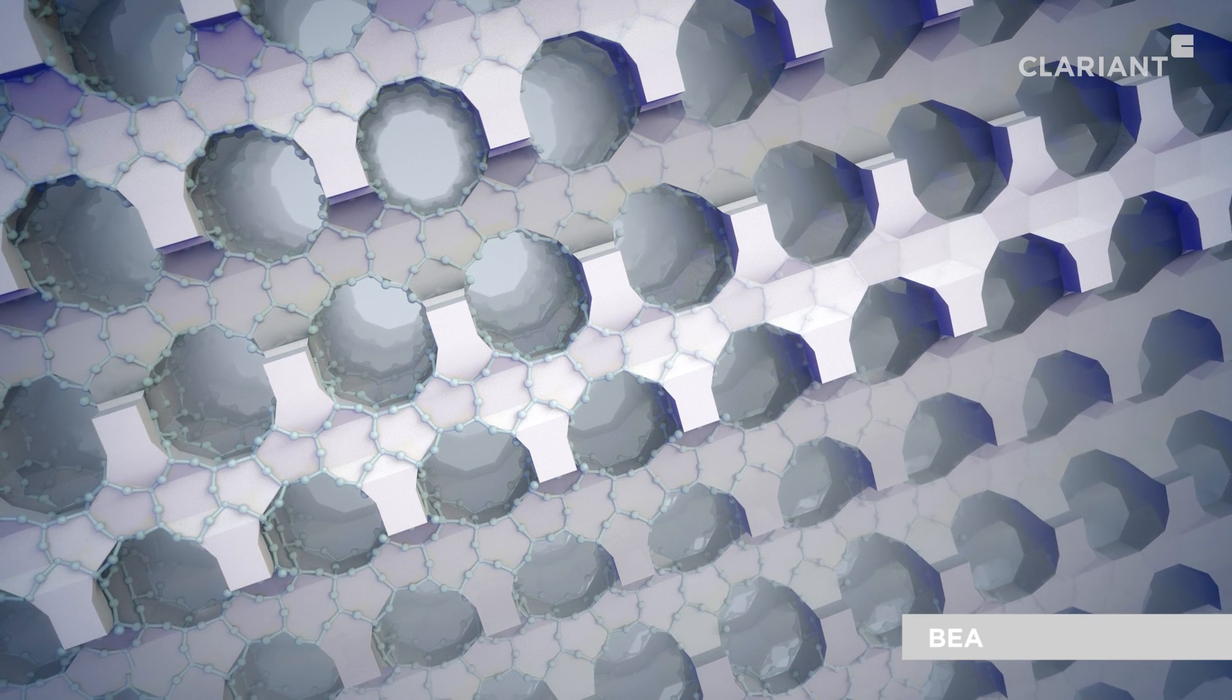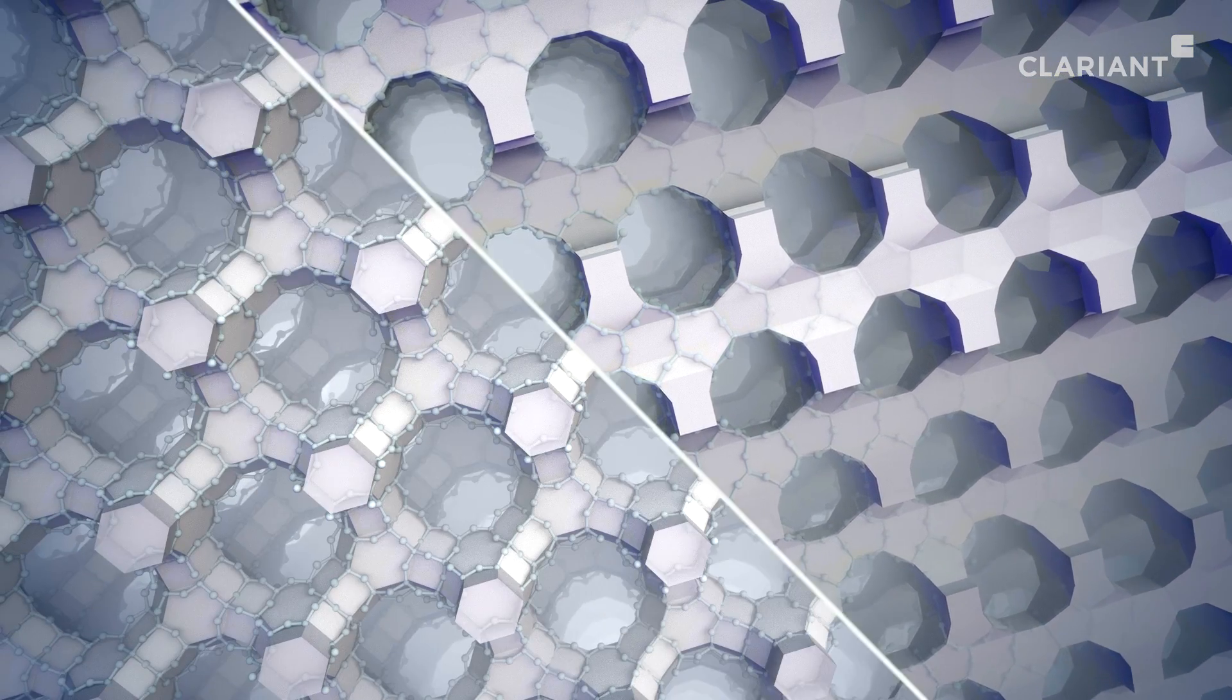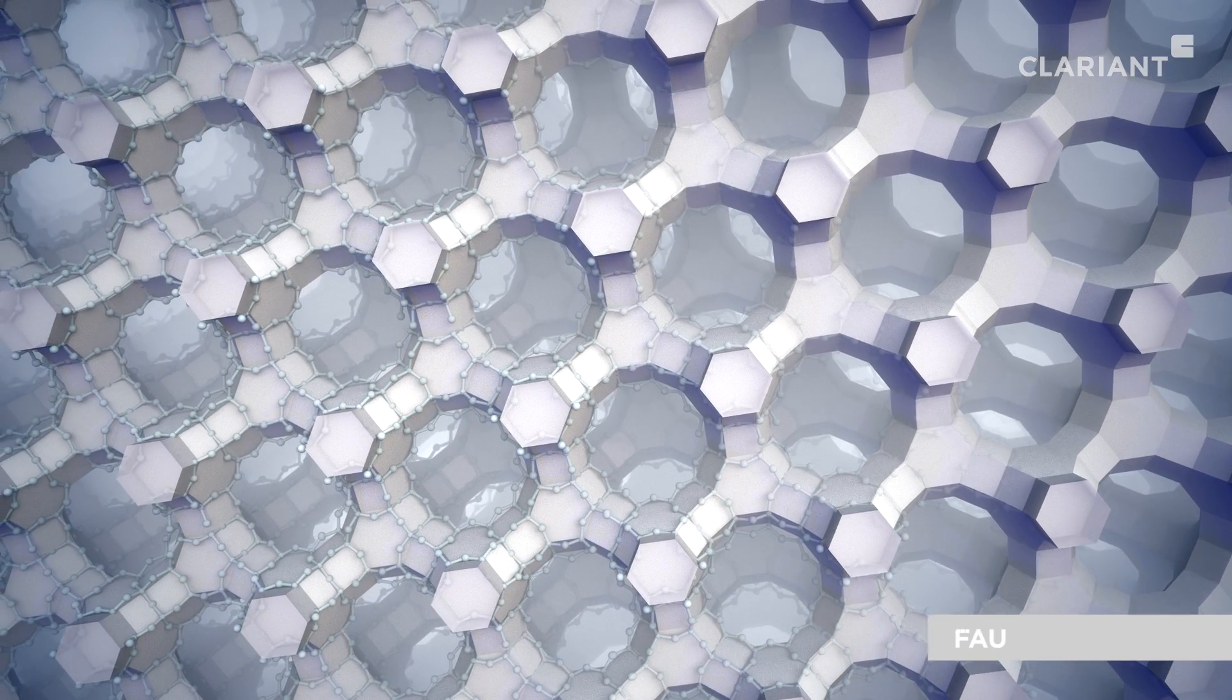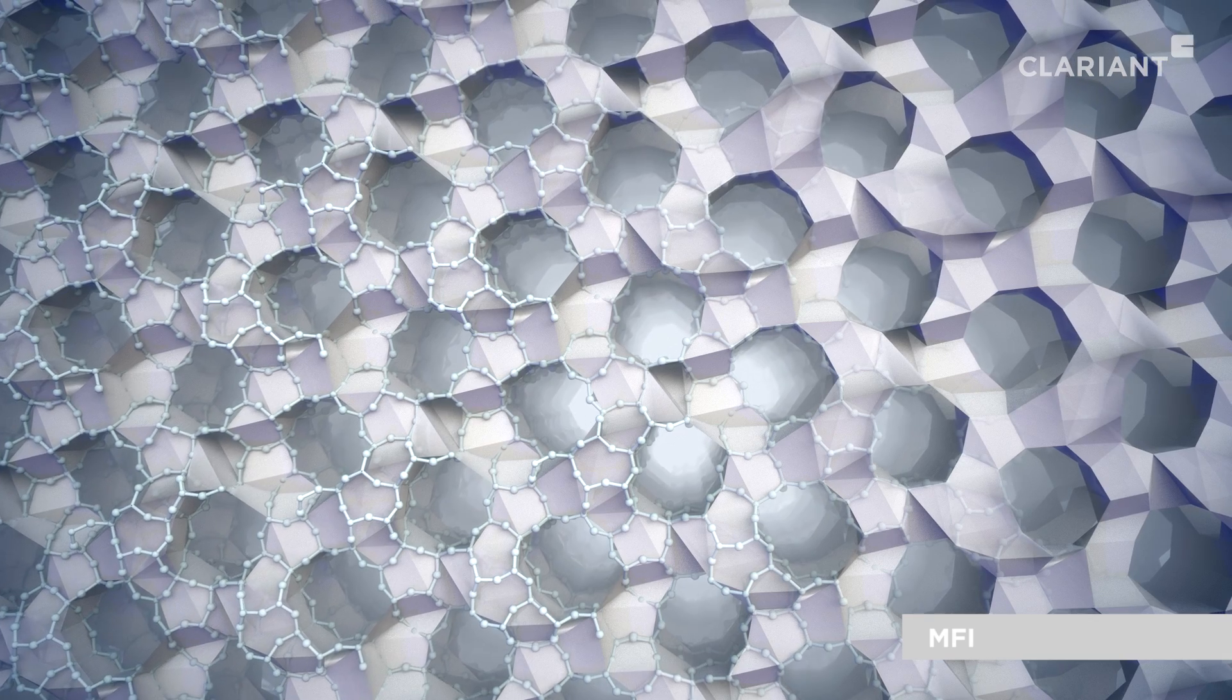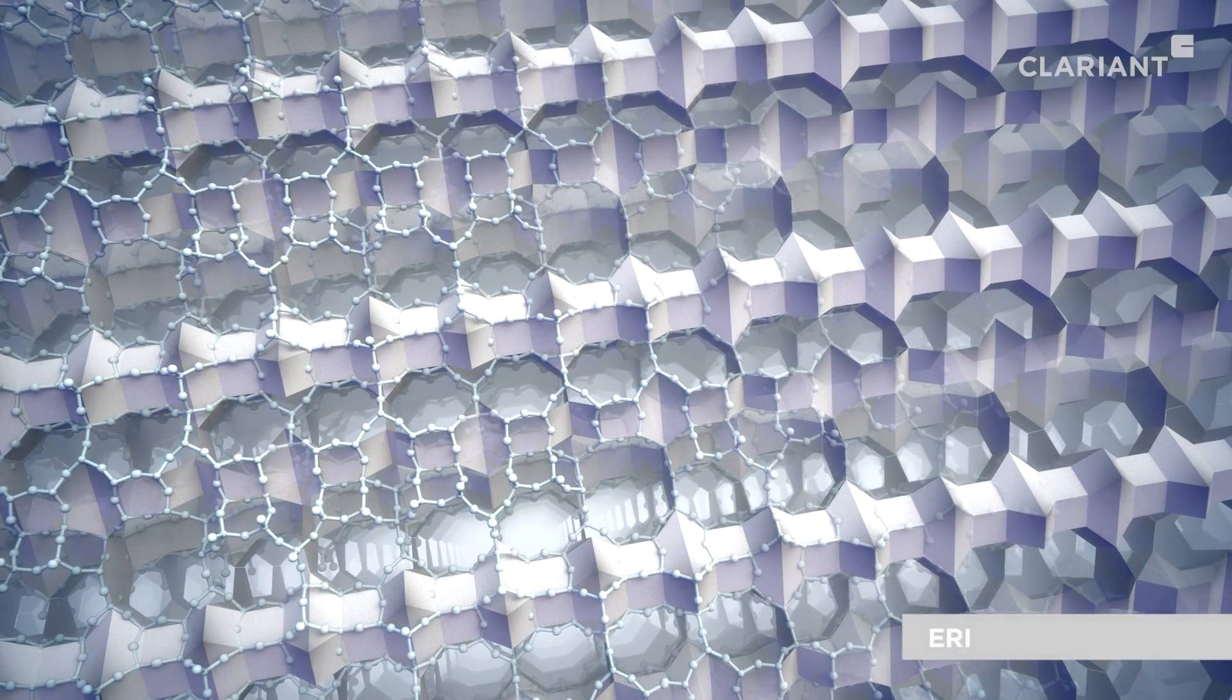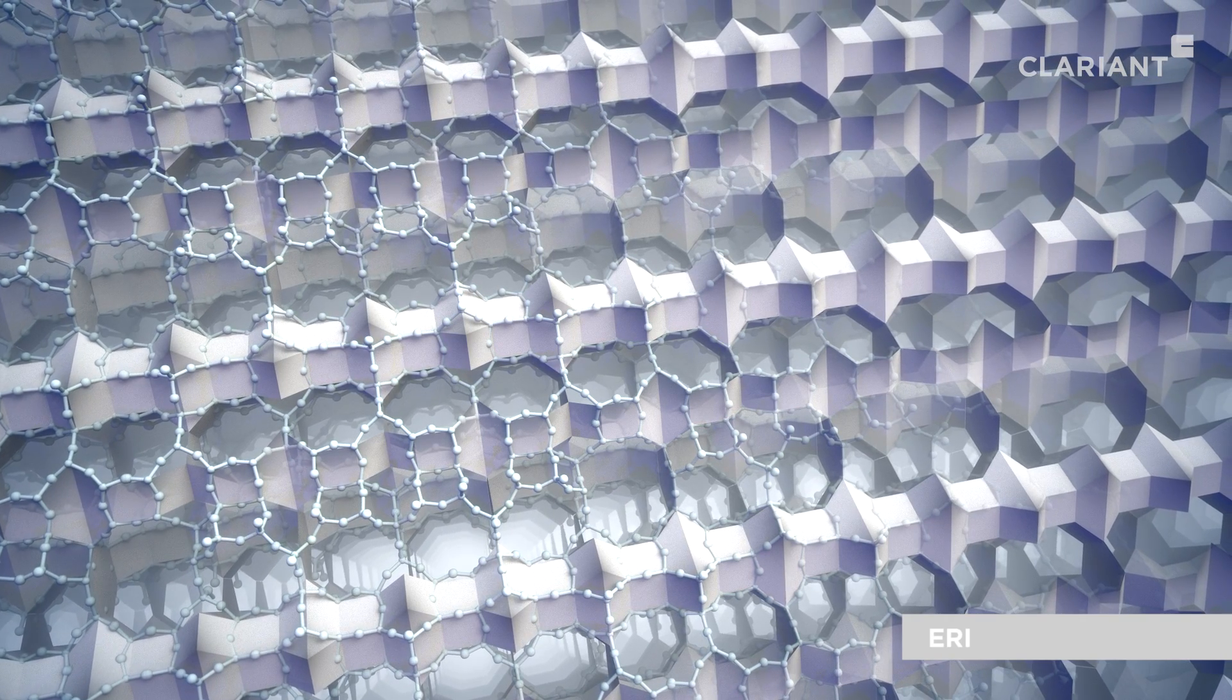Clariant zeolite raw material production capabilities include well-known zeolite structures, which cover a wide range of silica to alumina ratios. On demand, most other common commercial structure types can be produced.